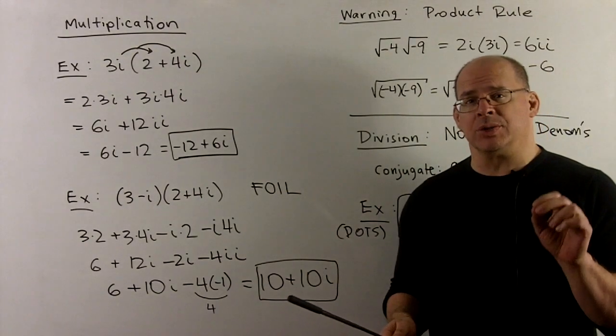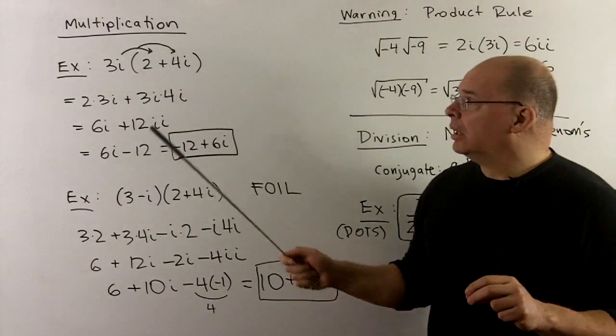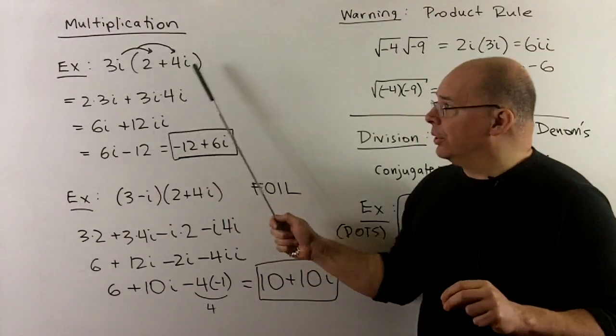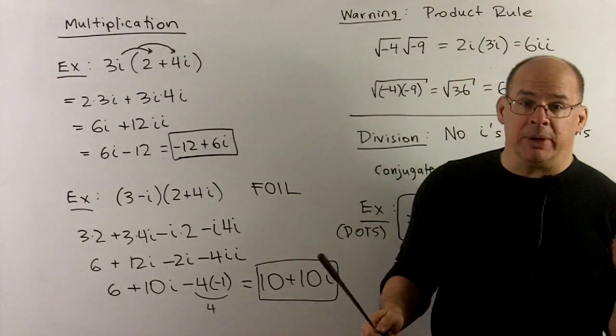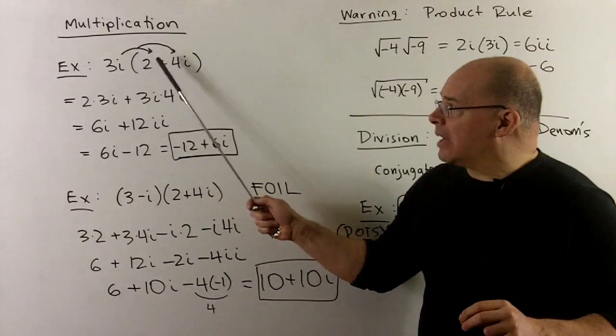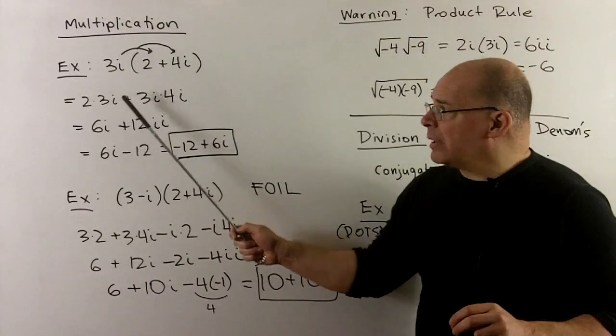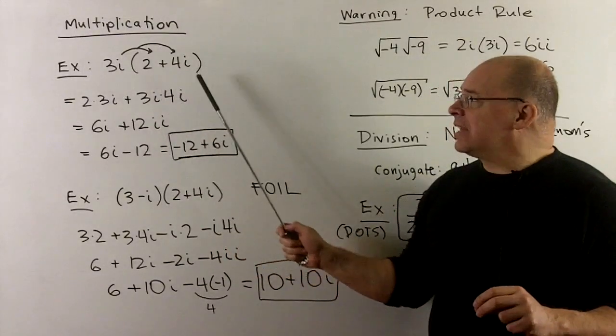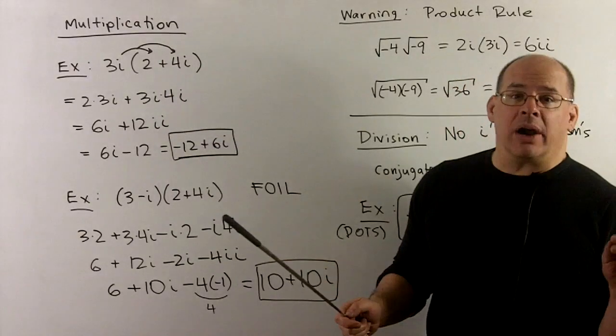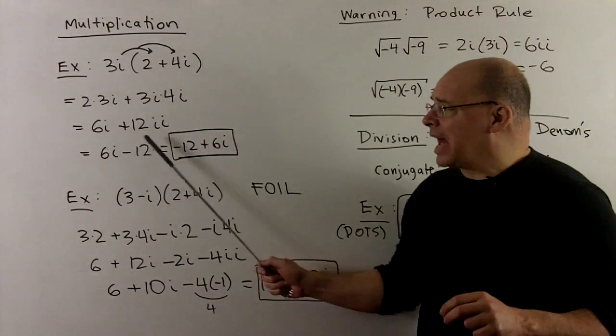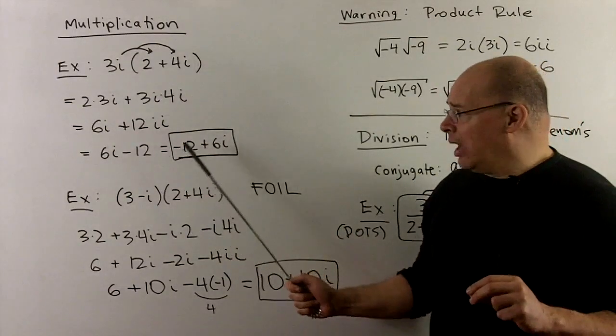Where things get interesting is with multiplication and division. Let's look at some examples. We'll take, first, a 1 on a 2. So, I've got 3i times 2 plus 4i. Distributive rule is still in effect. So, we'll take the 3i times 2, 3i times 4i, and then we'll see what we get. So, the 2 times 3i is just the 6i. 3i times 4i, we'll get a 12. And then ii, ii or i squared goes to minus 1. So, I get 6i minus 12. And if we're writing in a plus bi form, minus 12 plus 6i.